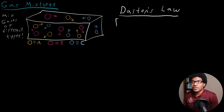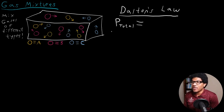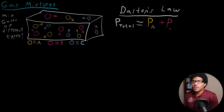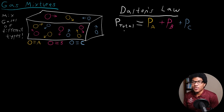We can write that out as an equation: P_total is equal to the sum of each of the individual partial pressures. For gas A, it has a partial pressure component P_A; for gas B, its own contribution P_B; and gas C has its own partial pressure P_C. When you sum up each of these individual partial pressures, you get the total pressure inside the container.